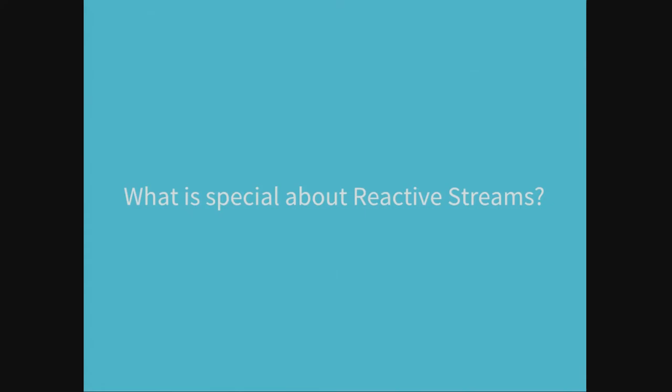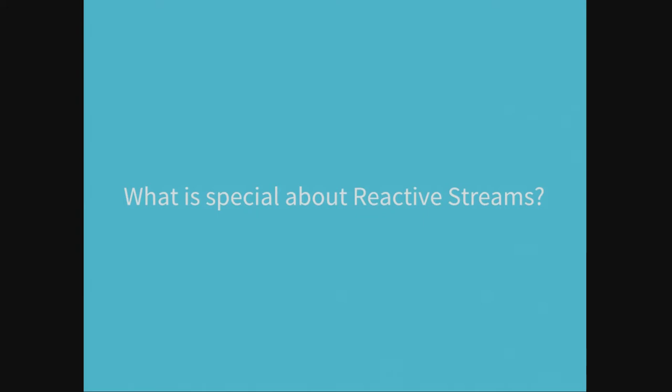These kinds of data and their transformations are all nicely written down using, for example, Java 8 Lambdas. But what was the specific problem that sparked the reactive streams project? What is so special about reactive streams?